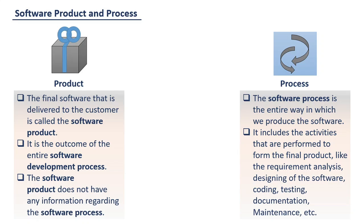Hence, the software process can also be defined as the collection of all the activities that as a result leads to the formation of the software product. The software product may not contain details about the software process, but the software process has every detail about the final product from the very initial phase itself — that is, how the software would be like.